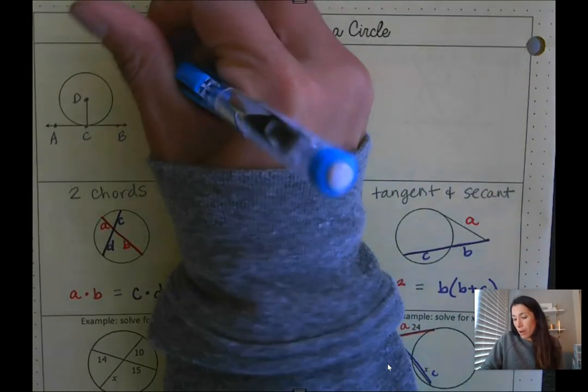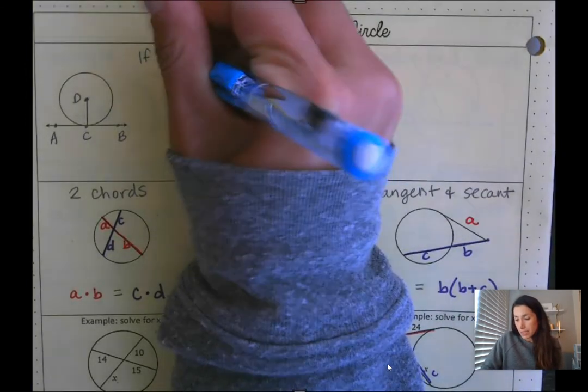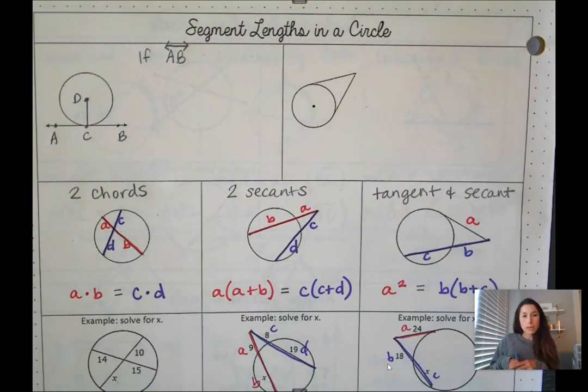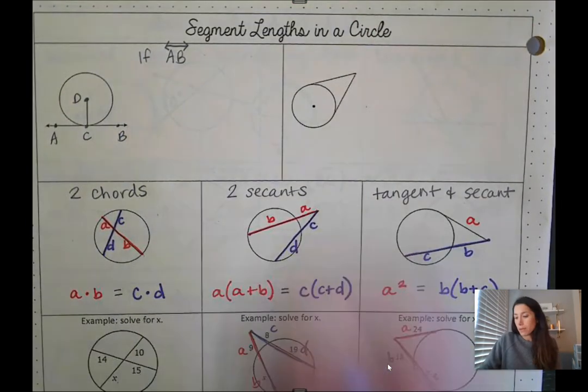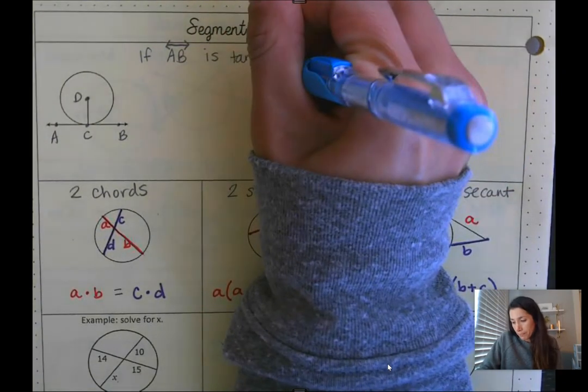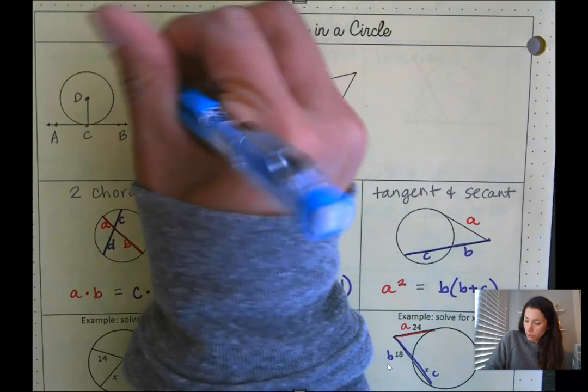So if line AB, it could be a line, segment, or ray, if AB is tangent to circle D, then what we know is that the line AB will be perpendicular, and I'll use my upside down T for my perpendicular symbol, it'll be perpendicular to CD.